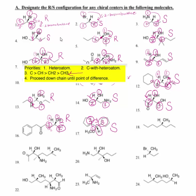Number eighteen: we have a methyl group, H which is number four, a propyl group, and a butyl group. Both nearest carbons are CH2s, so I walk down the chain looking for an atom of difference. Here's a CH2 and here's a CH3 — this CH2 has a greater priority than the CH3. That means the right side is number one, the left side is number two, and the methyl group is number three. That has us rotating counterclockwise, so number eighteen's asymmetric center is an S configuration.